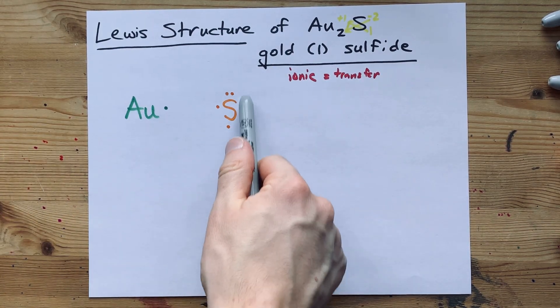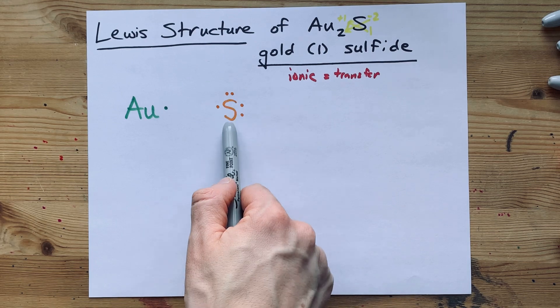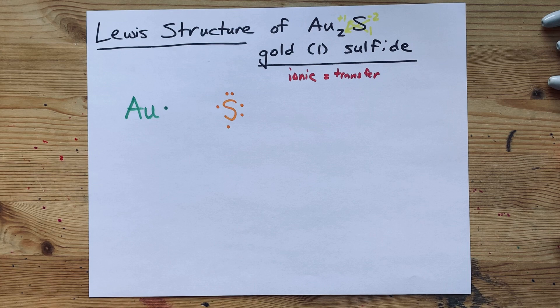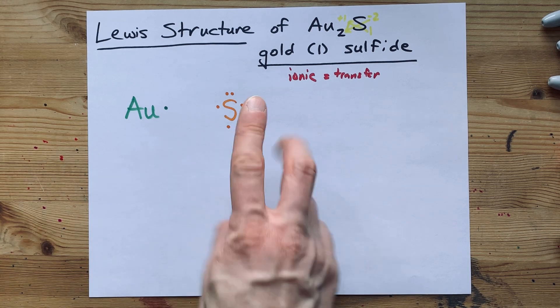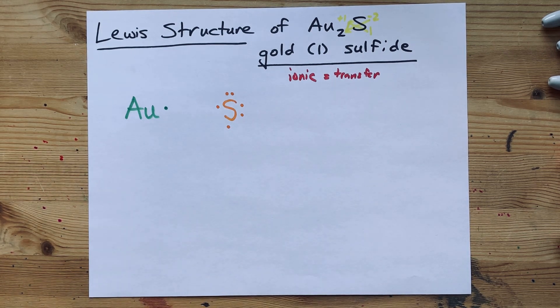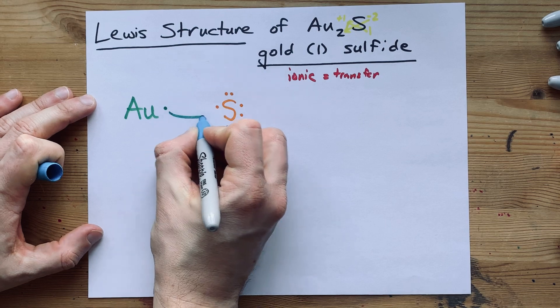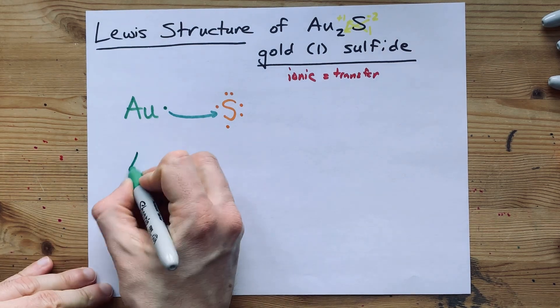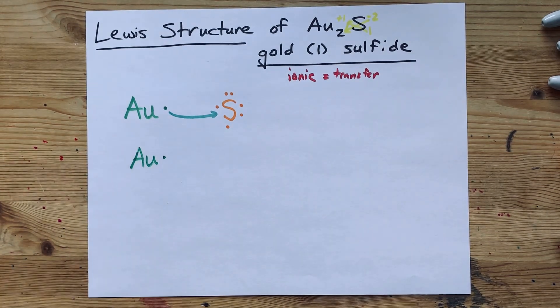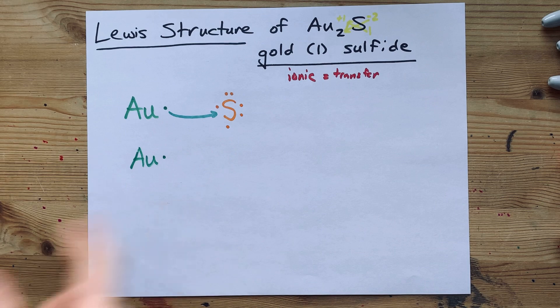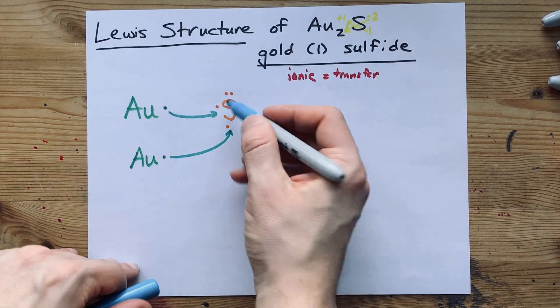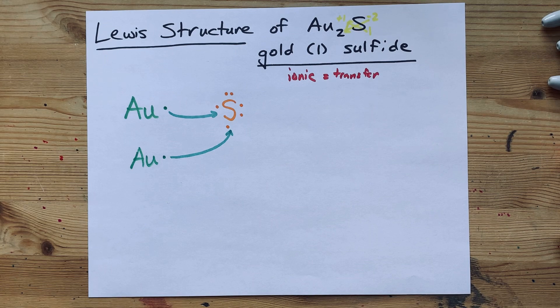And I know that nonmetals want a complete octet of eight electrons to be stable. Where can sulfur get two more electrons? Well, gold can give it one. Where is it going to get another one? The answer is from another gold atom, which brings its one valence electron. There we go. Now, sulfur has a complete shell of eight.